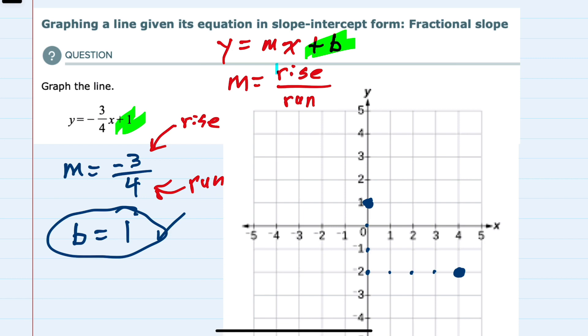So we now have two points, and we can connect these two points to graph the line, y equals negative three-fourths x plus one.